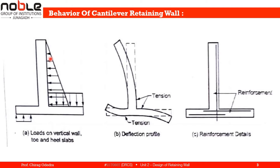Because of the lateral load from the earth, the vertical stem tends to bend outward. Because of the weight of the earth, the heel slab tends to bend downward. Due to the cantilever action, the toe slab tends to bend upward.